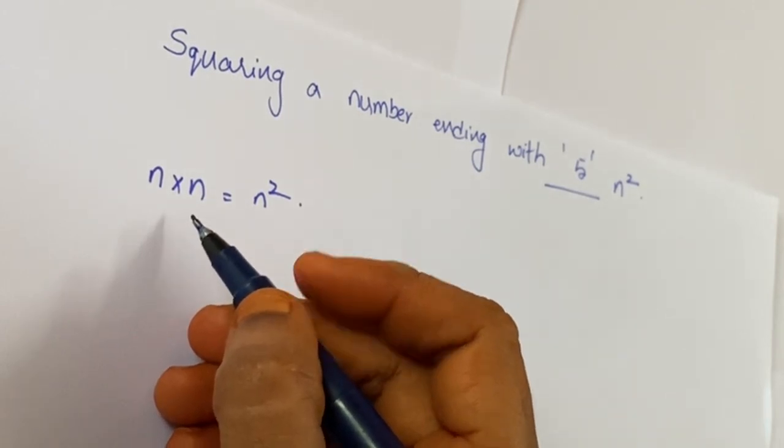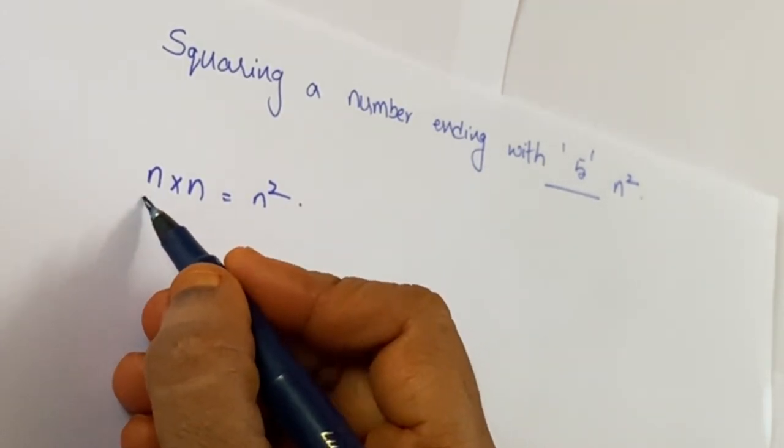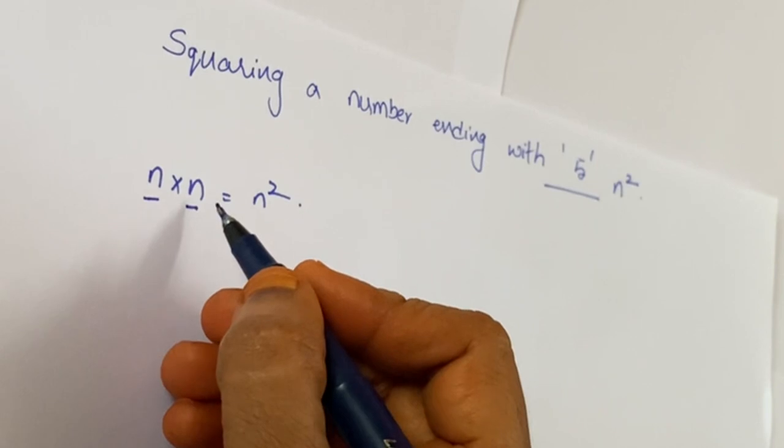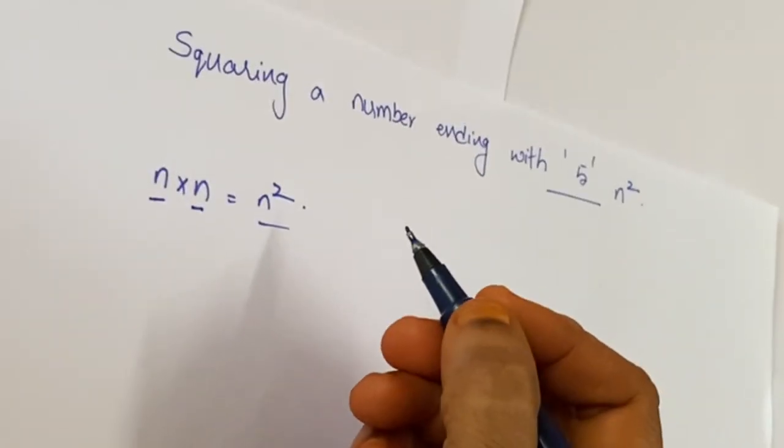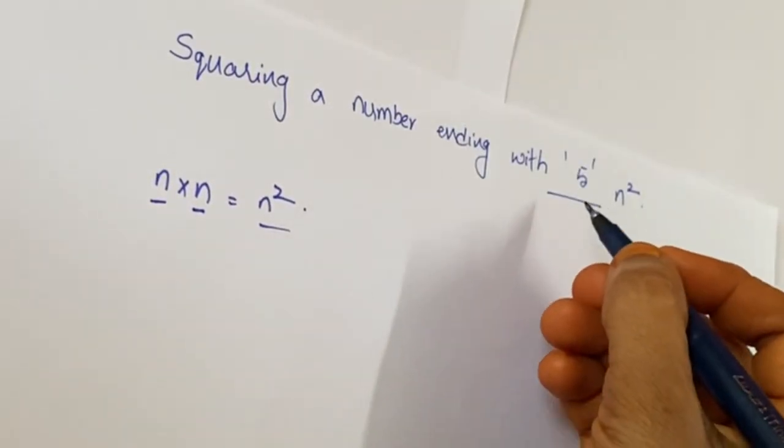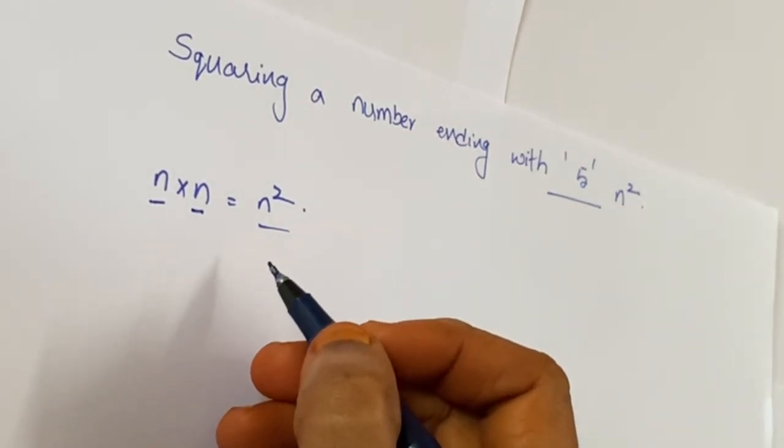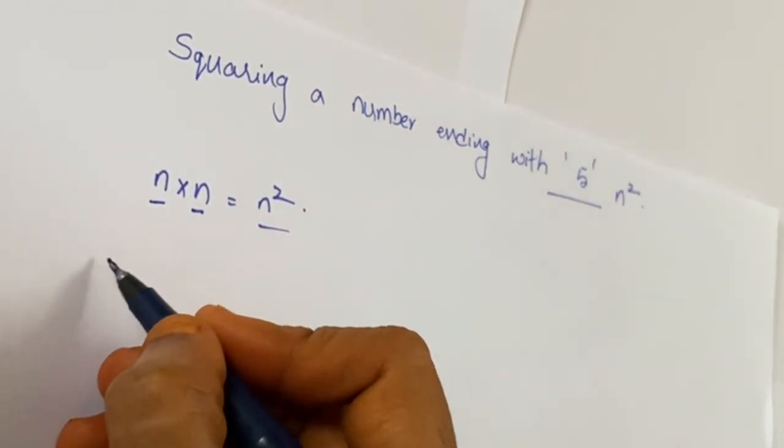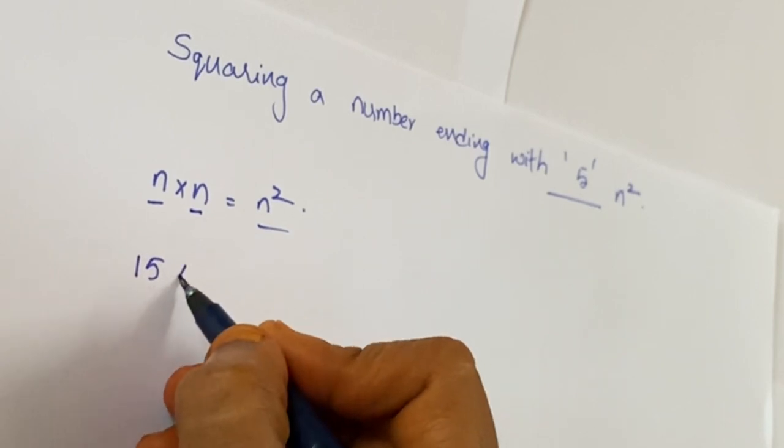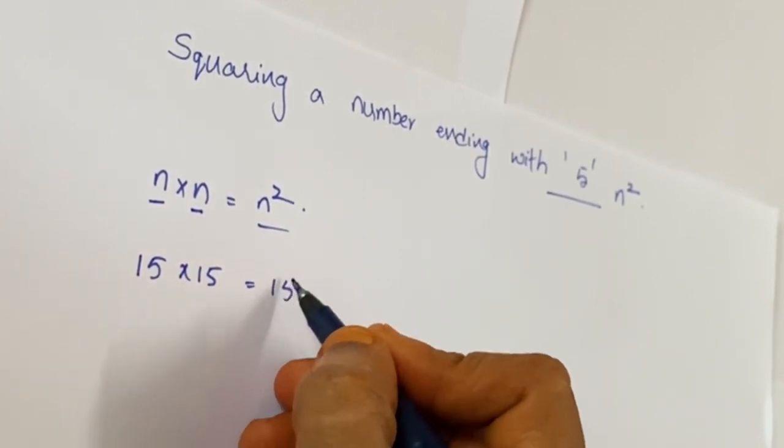Squaring a number means multiplying a number by itself. If we take n and multiply it by n, it gives n². Here we are taking numbers which end with 5, for example 15. 15 × 15 equals 15².